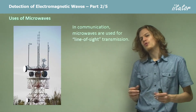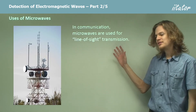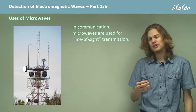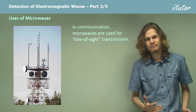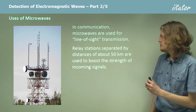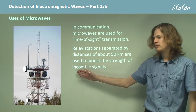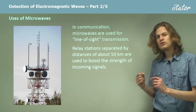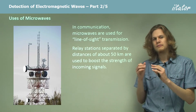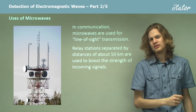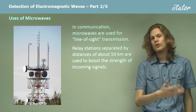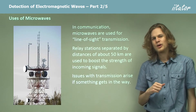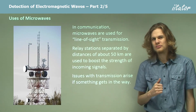We can also use microwaves for communication, not just for cooking. The thing is they can't be bounced off the ionosphere like AM radio, so we have to have line of sight to where we're transmitting to. For this reason we have relay stations, which might look something like this picture over here. These are separated by about 50 kilometres and they receive a microwave signal, increase its power, and send it to the next relay station. Of course if something gets in the way between two relay stations, we might not be able to transmit the microwaves quite as reliably.